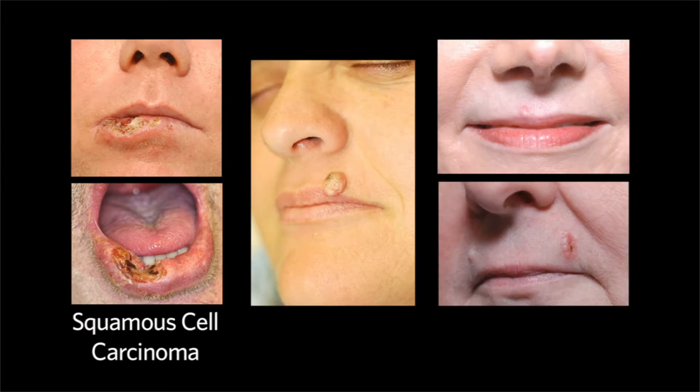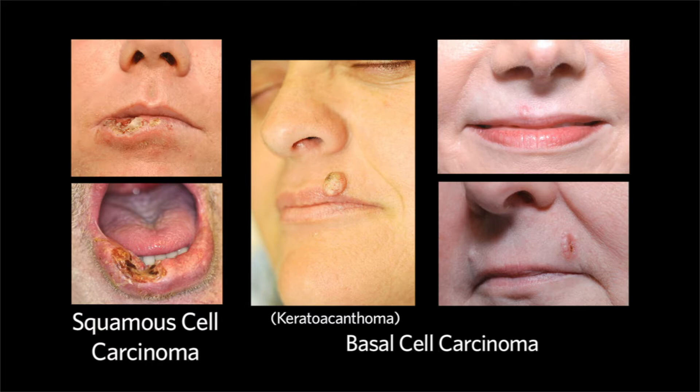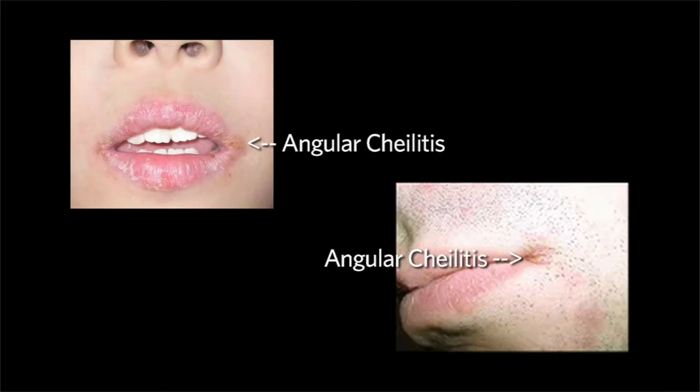Common lesions on the lips include squamous cell and basal cell carcinomas, as well as angular cheilitis, seen in patients who are elderly, have thrush, wear dentures, or are diabetic.